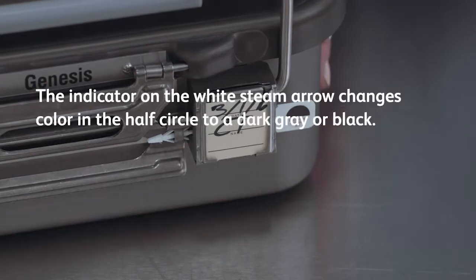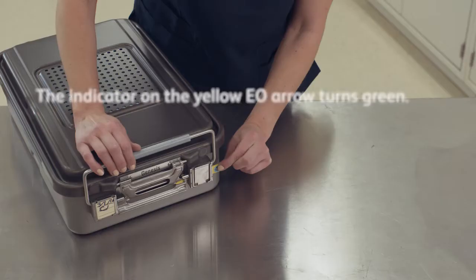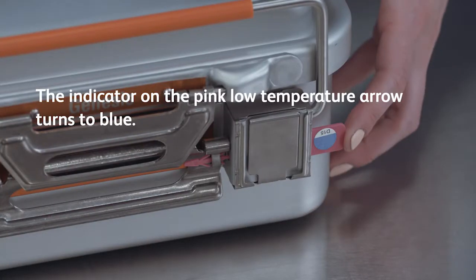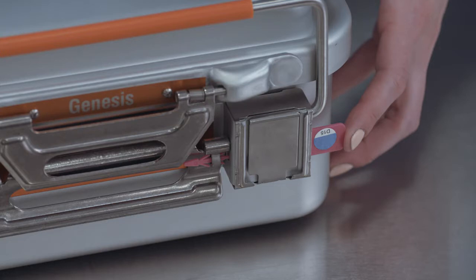Check for the appropriate color change of the chemical indicator dot found on the tamper-evident arrows. A chemical indicator that has changed color differentiates a processed indicator from an unprocessed one. As long as there is color change, the indicator has reacted sufficiently. The chemical indicators on the tamper-evident arrows are not an indicator of sterility.